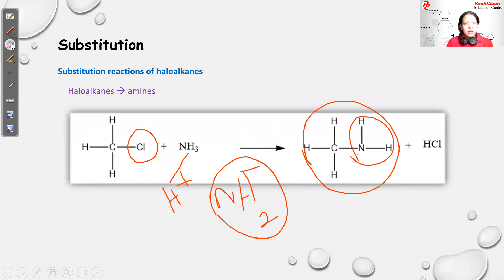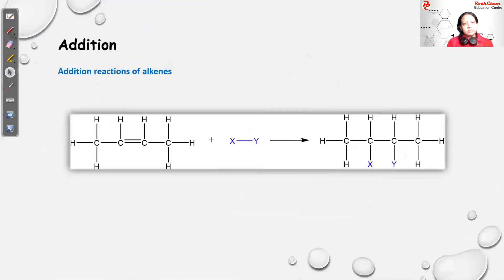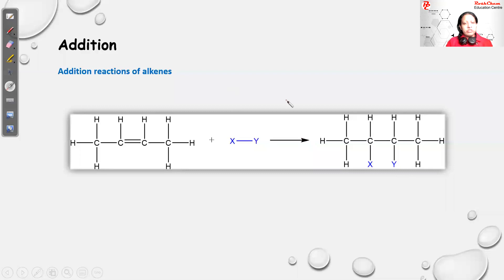Now we look at the next type: addition reactions. In addition reactions, you break the double bond first, then add atoms or groups of atoms to the carbons where the double bond was. For example, if the double bond is between the second and third carbon, you break it and add X to one carbon and Y to the other. These are called addition reactions, and there are several covered in VCE chemistry.